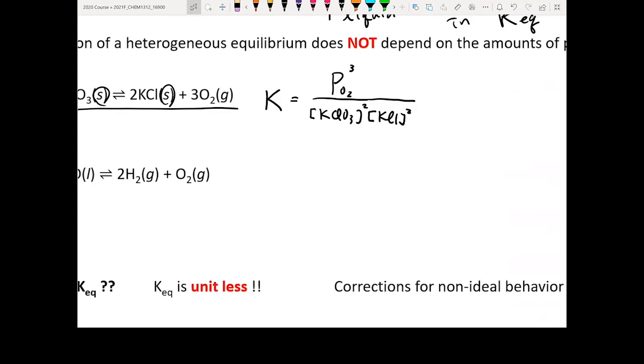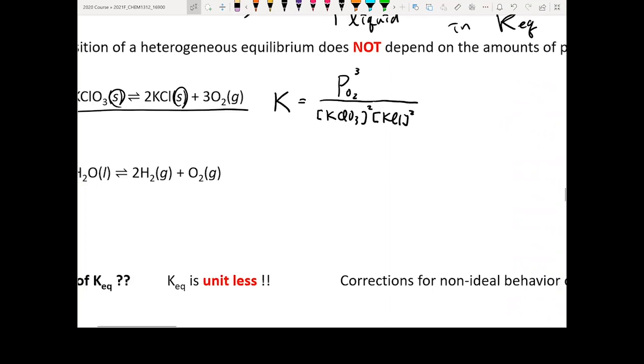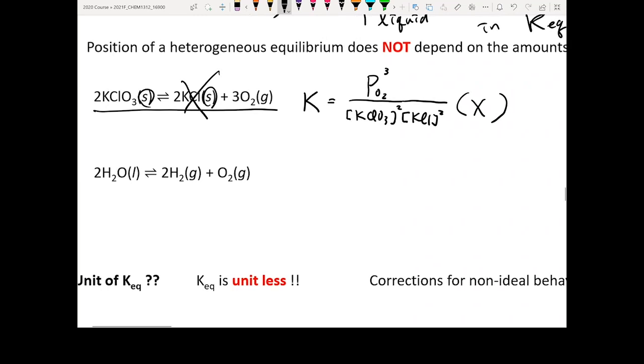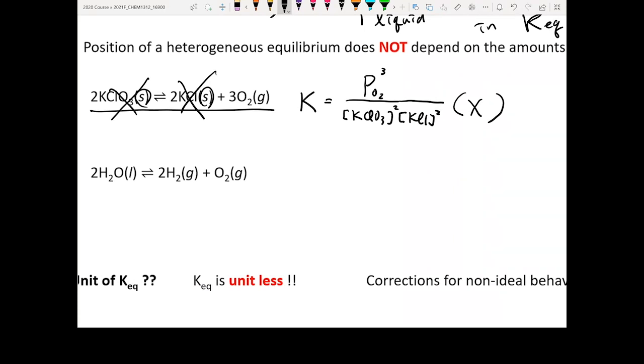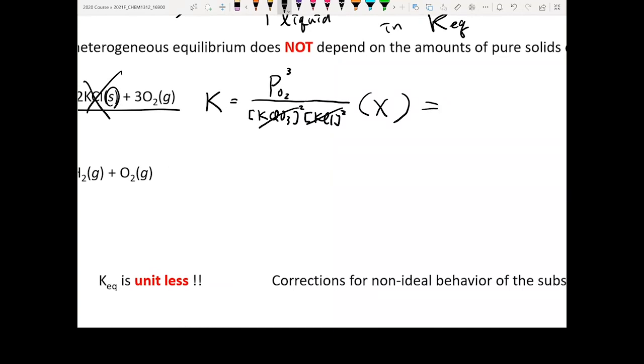For most cases it should be right, because you can see we said it's AA plus BB gives CC plus DD, right? But here, this is actually incorrect. The main reason is because you cannot actually include the pure liquid or pure solid in your equation. This one cannot be included, this one cannot be included. So the really correct way is you should not write this, you should not write this. Your K should simply be a function of oxygen pressure to the third power.